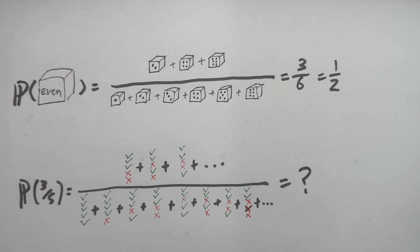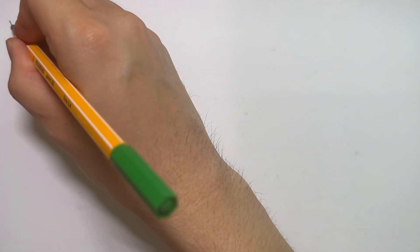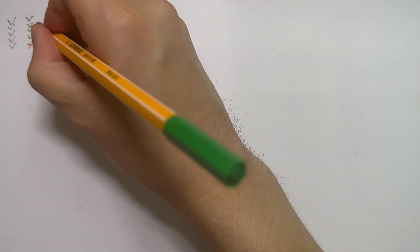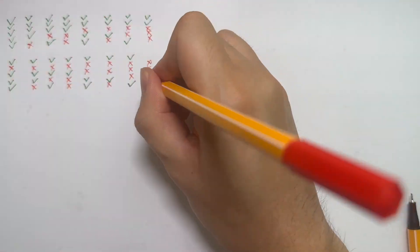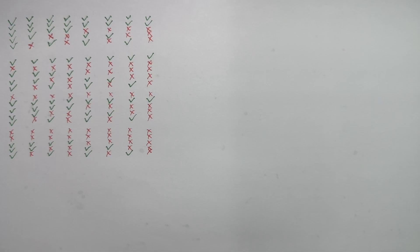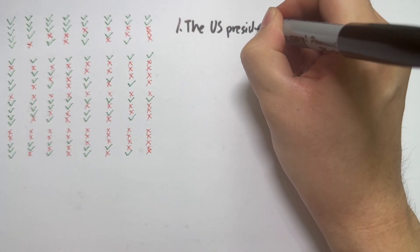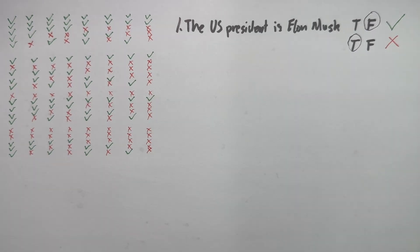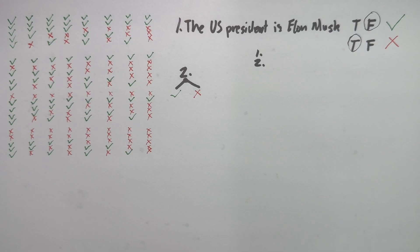Every possible way to answer the quiz includes getting all correct, all but the last one correct, all but the fourth one correct, all but the last two correct, and so on. We need to count all of these. How many ways are there to answer the first question? Two — either it's correct or wrong. What about the second question? Also two ways — correct or wrong. How many ways are there to answer both the first and second questions?